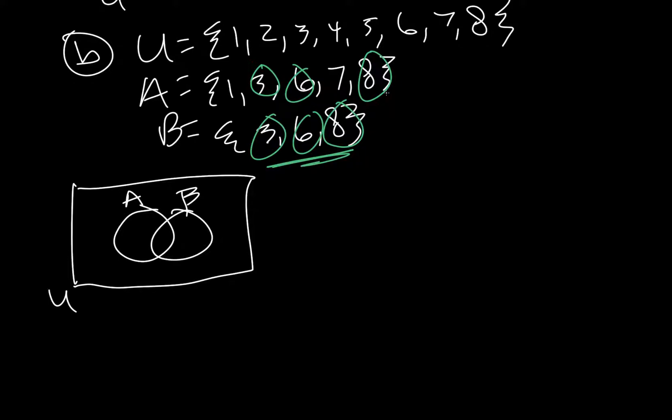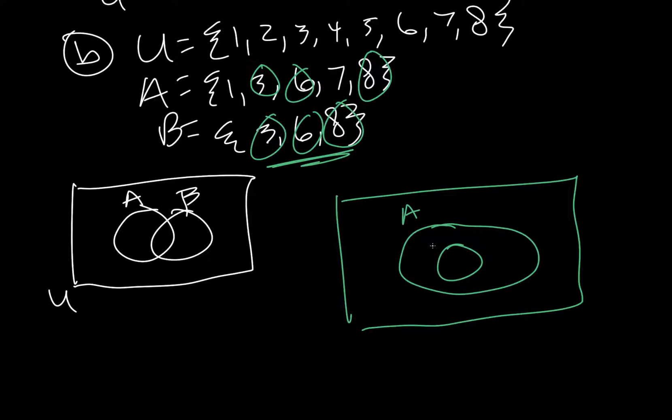Now, this is actually a special case. Because all of B is found in A, I'm actually going to redraw my Venn diagram. So, A, B. Because it's going to be a subset. So, A, B.